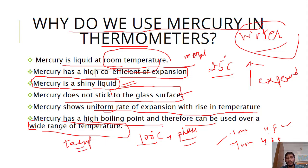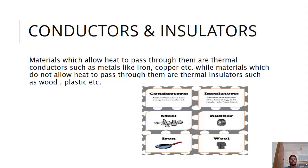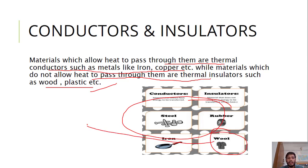There are materials which allow heat to pass through them, they are thermal conductors such as metals like iron, copper, steel. Materials which do not allow the heat to pass through them are thermal insulators such as wood, plastic. Here are some examples. This is wool, this is an insulator. You wear woolen clothes in winter to keep warm.